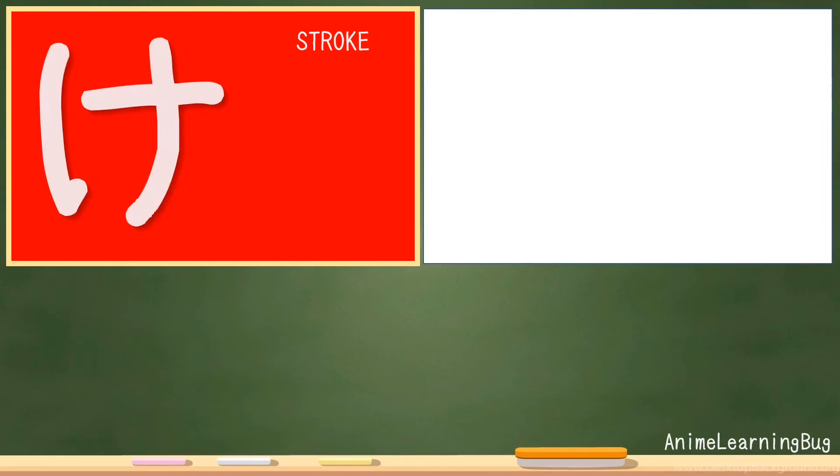Next character will be Ke. There are three strokes to complete this character. And for the correct stroke, we can check the video on your right.